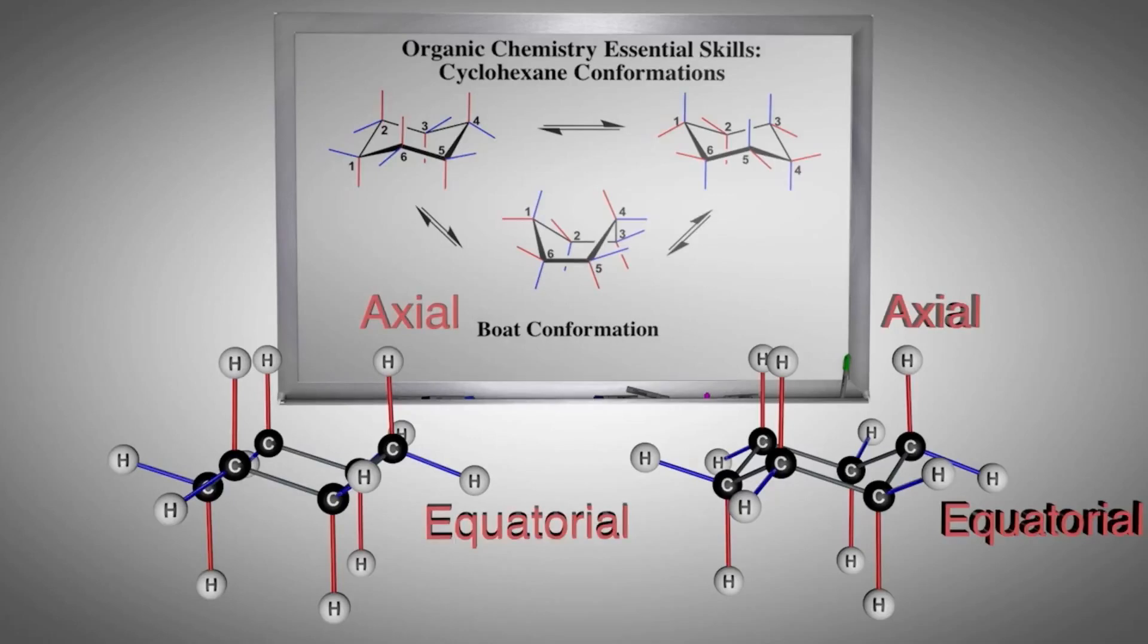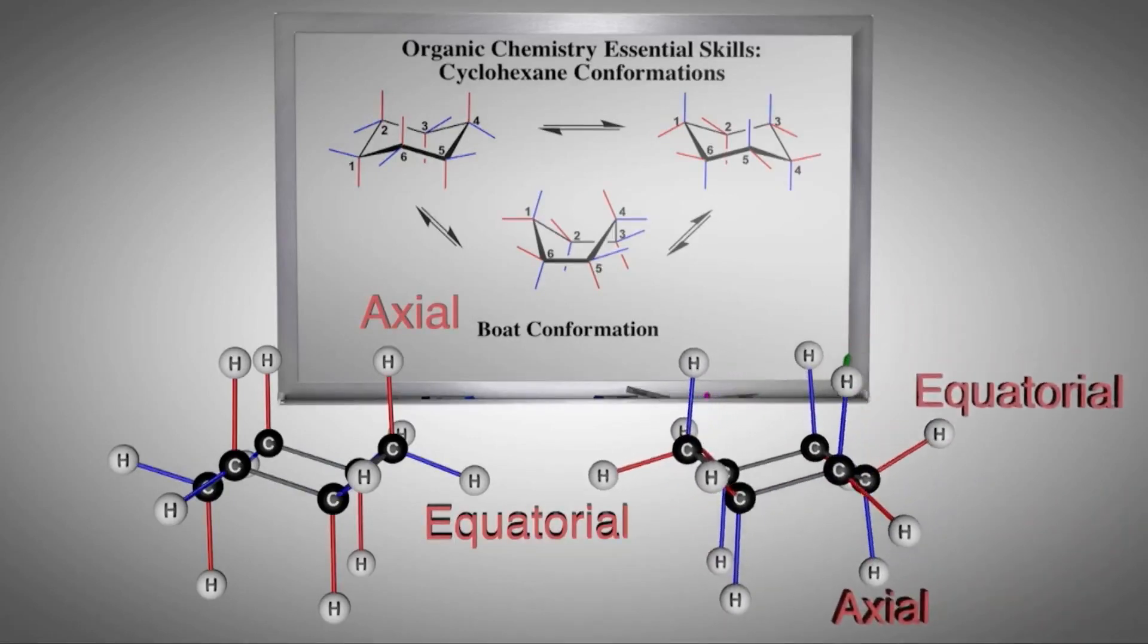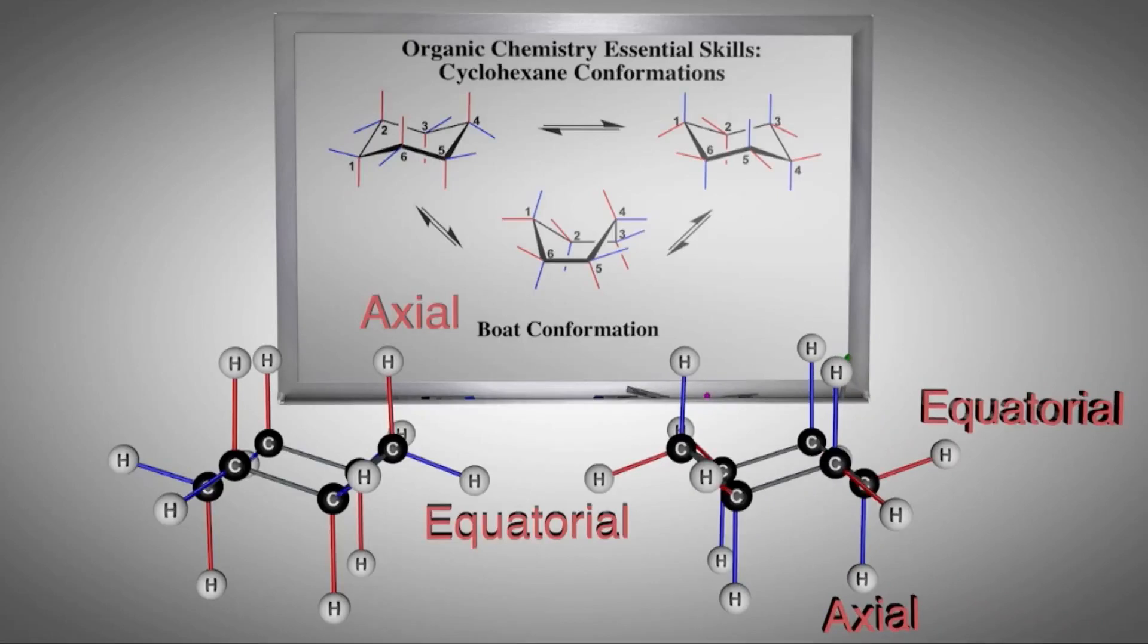There are two very important outcomes of this chair or ring inversion. First, notice that axial groups become equatorial, and the equatorial groups become axial. Second, if a group was up, it still remains up, relative to the other group labeled down, which is also attached to the same carbon atom. It is worth your efforts to master drawing pairs of chairs.